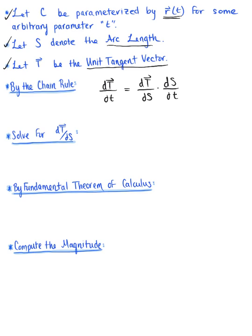Using what we know from the chain rule, we now want to solve for the rate at which the unit tangent vector is changing with respect to the arc length, as established with our intuitive definition. To do that, we divide both sides by the rate of change of the arc length with respect to that arbitrary parameter t. This leaves us with the rate at which the unit tangent vector changes with respect to arc length, defined as dT/dt divided by ds/dt.